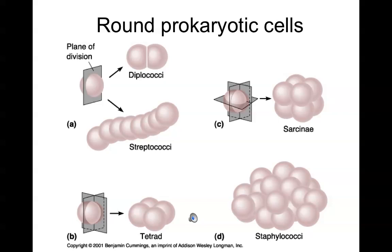If we have more than one, then we change the ending from -us, which is singular in Latin, to -i, which would be the plural ending, and we might add a prefix that tells us the arrangement of the spherical-shaped cells.